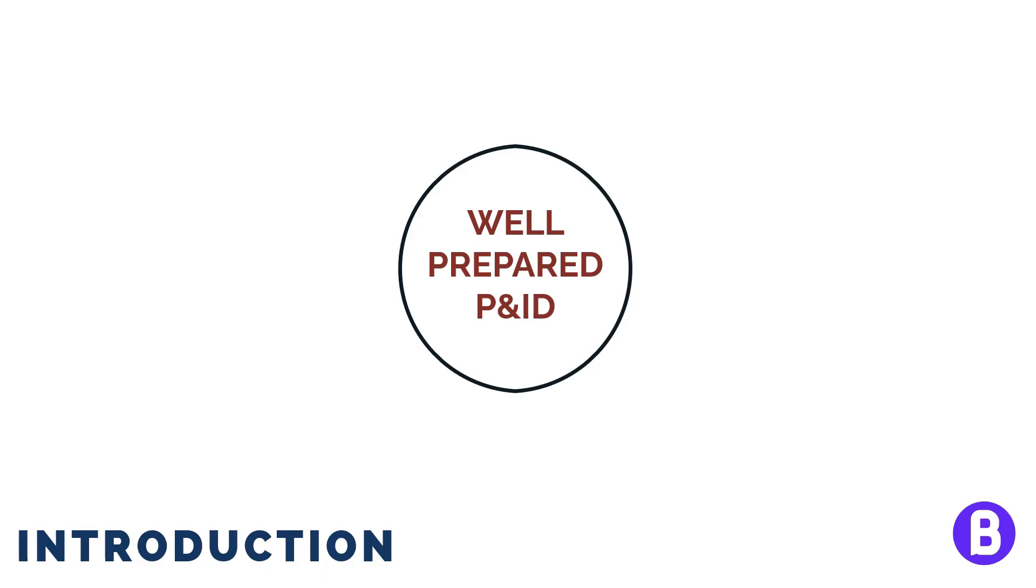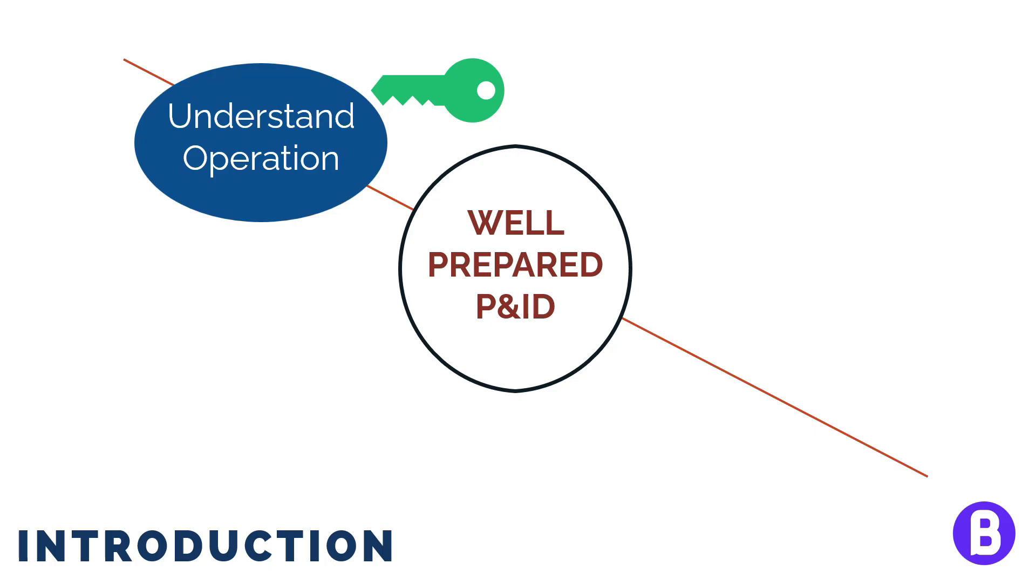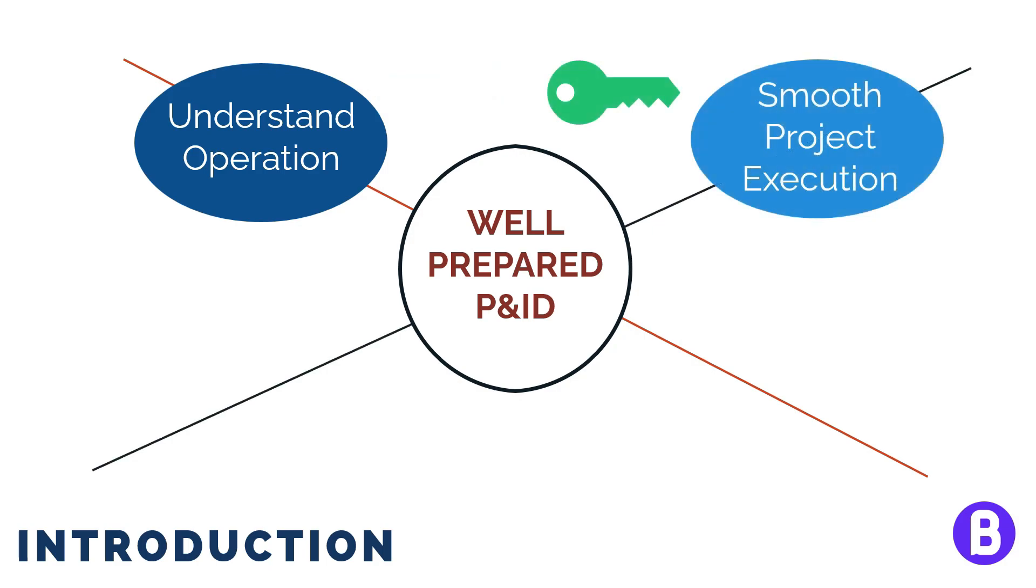P&IDs or piping and instrumentation diagrams are considered as a key document when designing or upgrading any process plant. Through the P&IDs, we are supposed to be aware of how the plant shall operate. A well-designed P&ID preparation would lead to a smooth project execution.